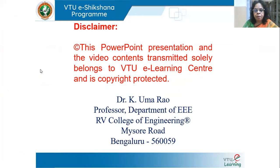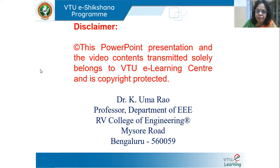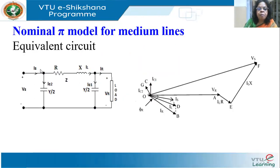In my last session, I detailed about the T model for medium lines. Medium lines are between 100 to 250 kilometers, and this is basically how we model the line. In the short line, we neglect the capacitance, and in the medium line, we have to consider it because this capacitance will have a significant impact on determining the efficiency and regulation of the line. In this class, we will see one more model which is called the pi model.